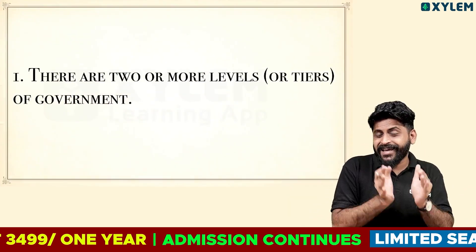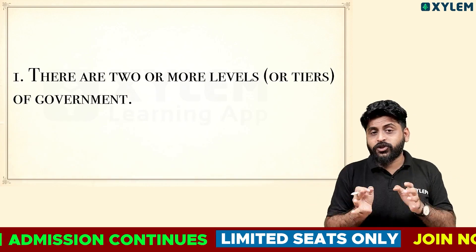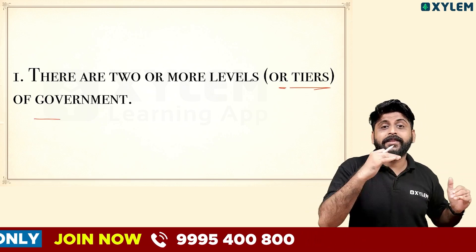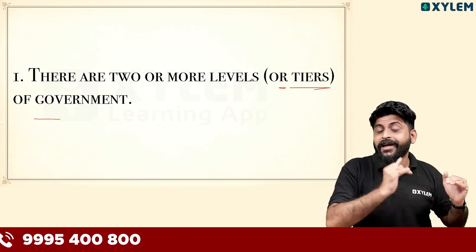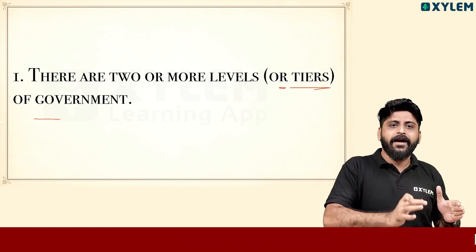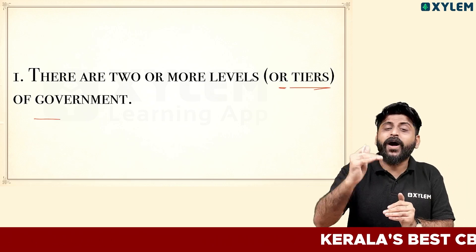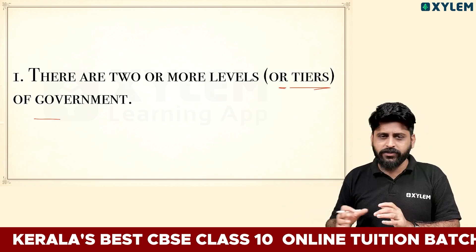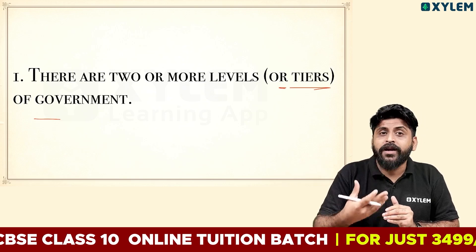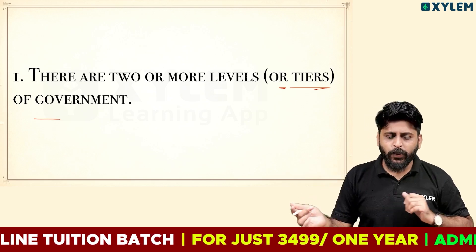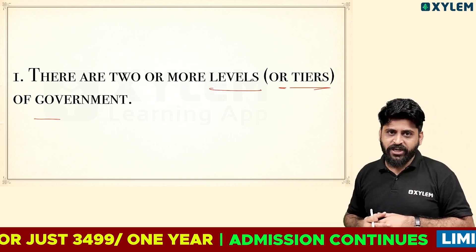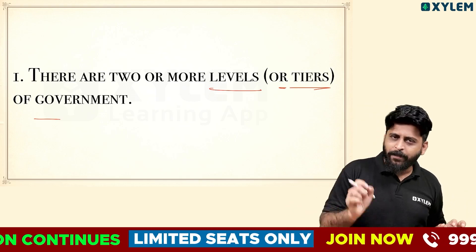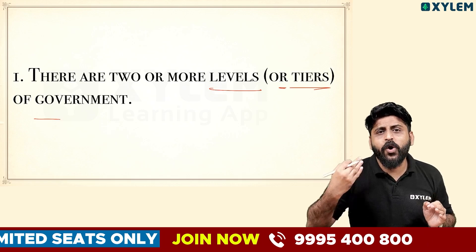The first feature: there are two or more levels of government — also called tiers of government. These include the central government, the state government, and the local self-government. This level of power sharing is called vertical power sharing. This is the first feature of federalism.